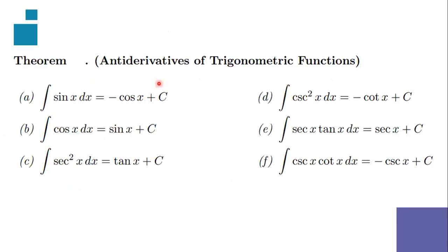Let's proceed with the theorems of integrating trigonometric functions. We have here six trigonometric functions to consider. Remember that differentiation is the inverse of anti-differentiation, so you can see familiar theorems here. For the integration of sine x dx, that's simply equal to negative cosine x plus C. The same logic applies for B, C, D, E, and F.